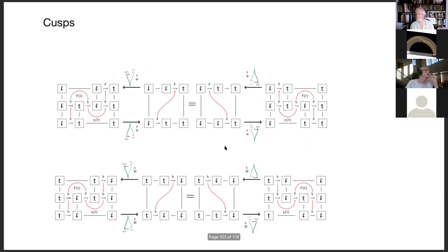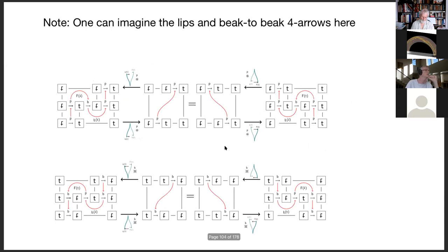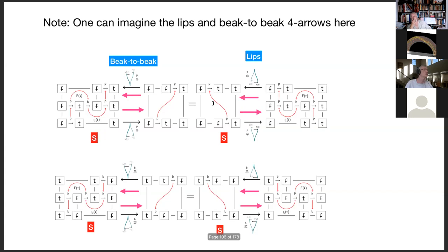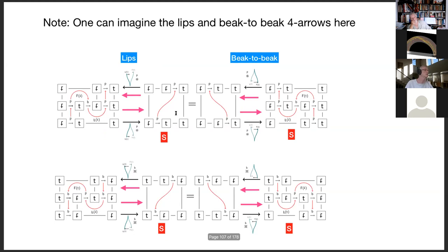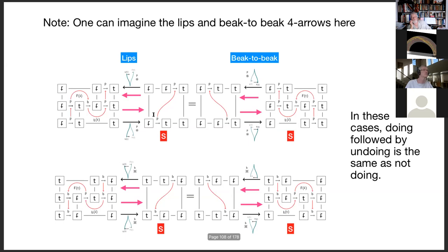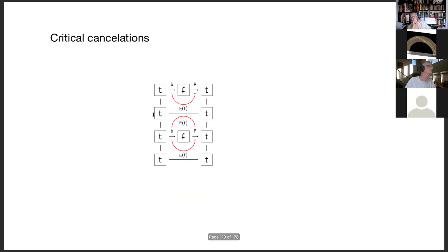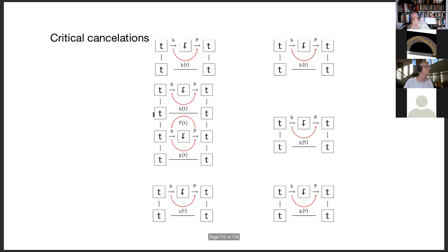The nice thing about this picture is you can use it to imagine both the lips and beak-to-beak four-arrows. If you want to see beak-to-beak, you start here, go here, and then go back. The iconography says do this first and then do that, and the beak-to-beak glyphography suggests this should be comparable to the identity on that. For the lips, you start here, go here, and then back — going up this triple arrow and then back along the other triple arrow, which is the same as remaining static. Doing followed by undoing is the same as not doing.